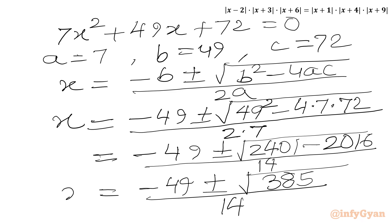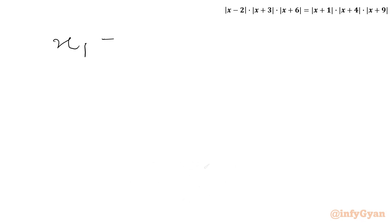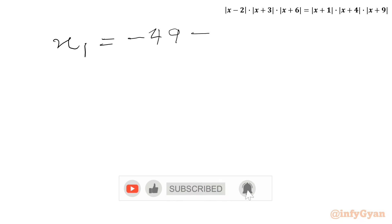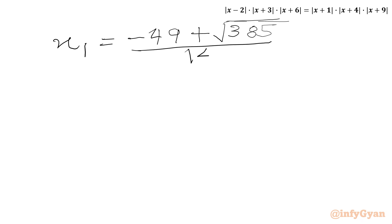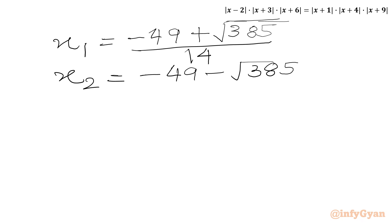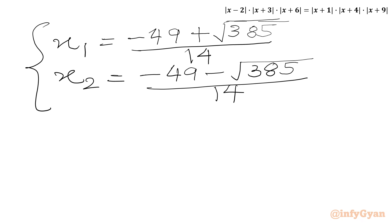So we are having two real solutions from our first equation. Our first solution x₁ equals (−49 + √385) / 14, and our second solution x₂ equals (−49 − √385) / 14. So from the first case we have two real irrational solutions. Now we will consider our second equation.